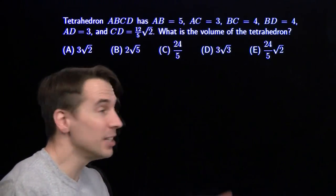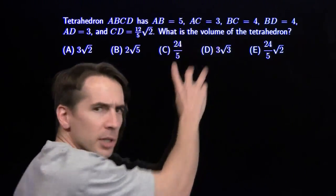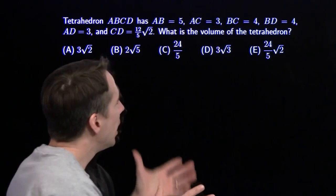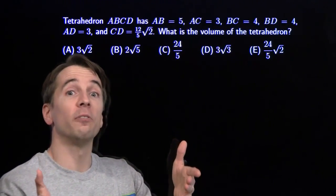Hopefully we can find something interesting in these edge lengths. The first three give us something interesting right away. We've got 3, 4, 5. Triangle ABC is a 3, 4, 5 right triangle.